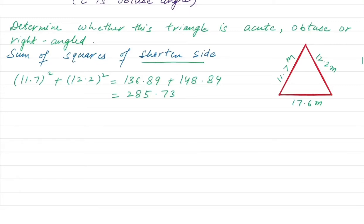Now we need to square the longest side. The longest side is 17.6. So 17.6 times 17.6 gives 309.76.